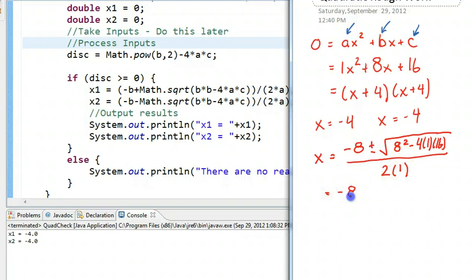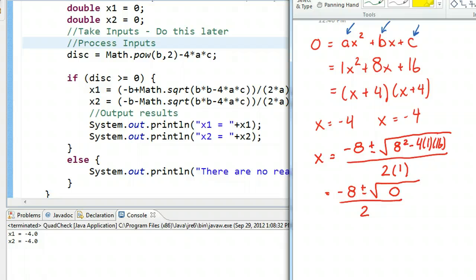Equals negative 8 plus or minus the square root of, and if you work at the discriminant, you get 0. And this is what we're looking for. We're looking for cases when the discriminant is equal to 0.